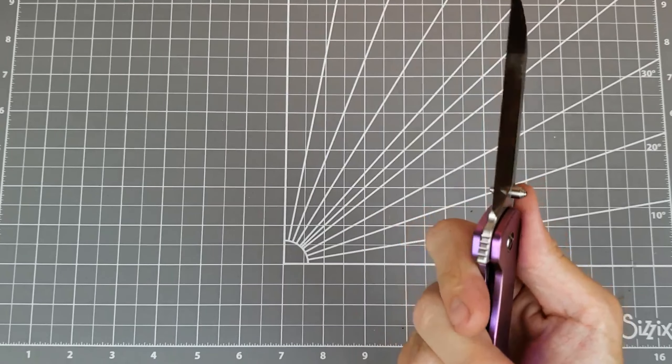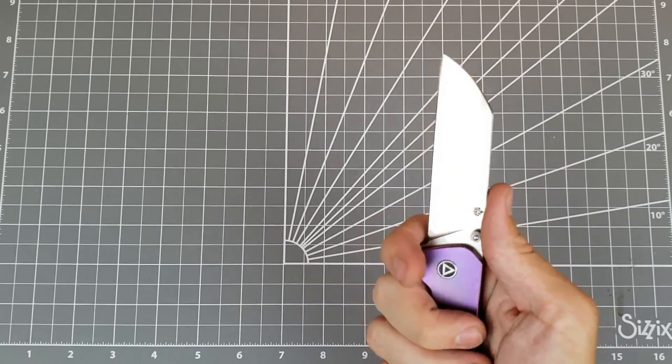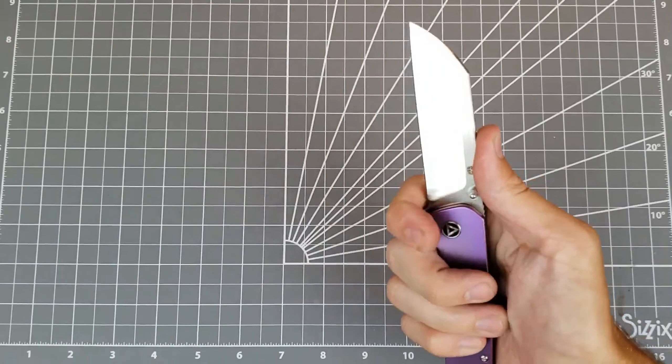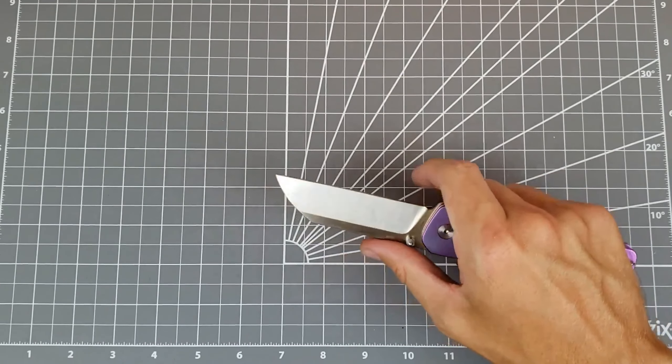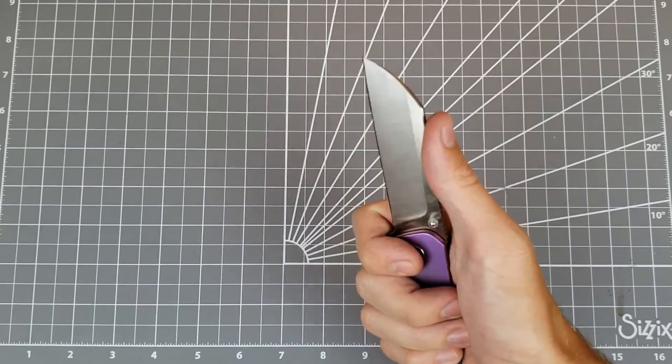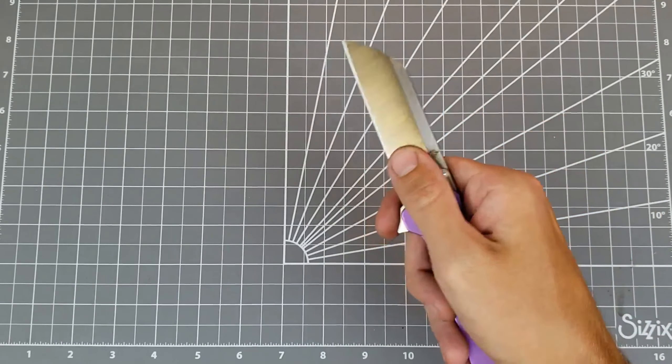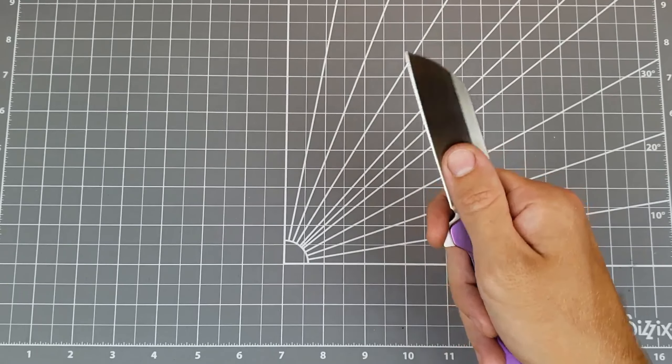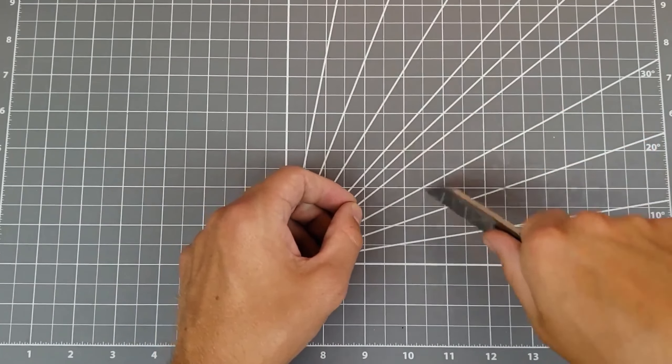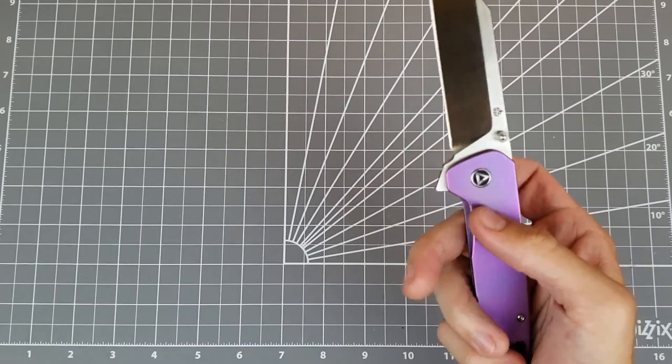Now this flipper tab is interesting. It has this jimping up here, which I guess is to choke up. And yeah, that works. That's not bad. You can put your index finger here and get a lot of control up there. Same in a pinch grip. You can put your index finger there and work with the tip really easily. So yeah, that works. I like it.